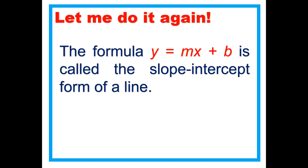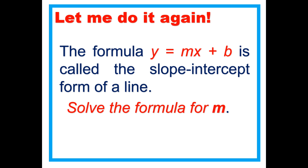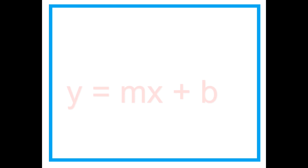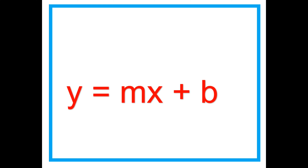The formula Y equals MX plus B is called the slope-intercept form of a line. Solve the formula for M. Again, the formula is Y equals MX plus B, and we are going to solve it for M.